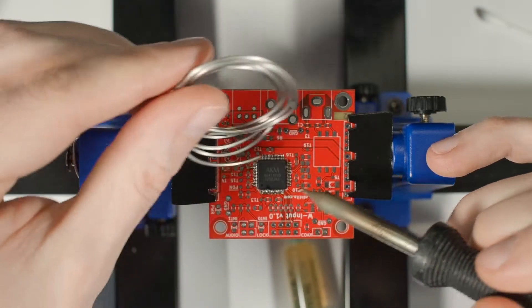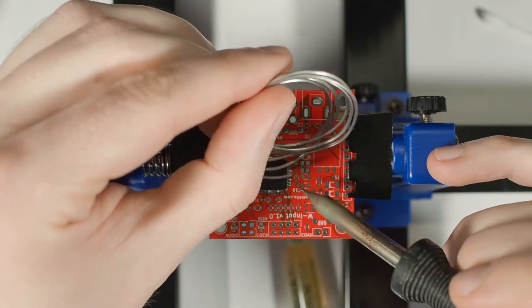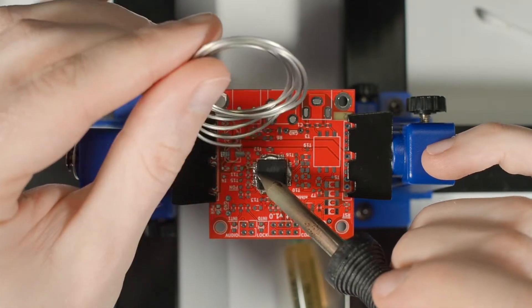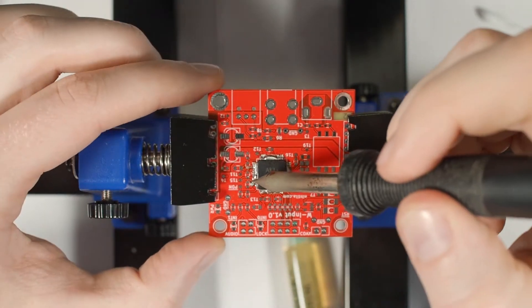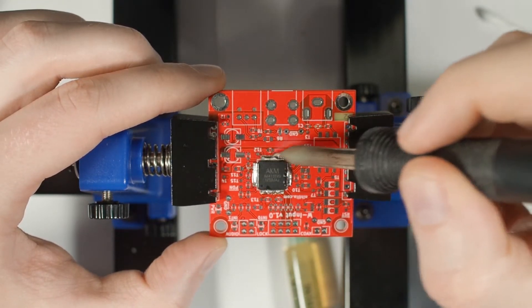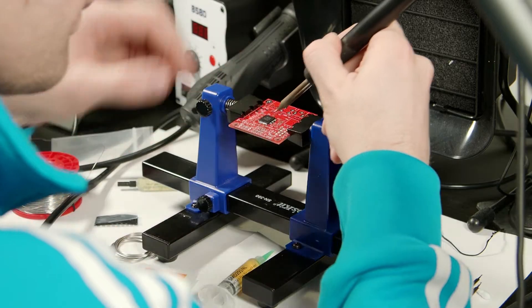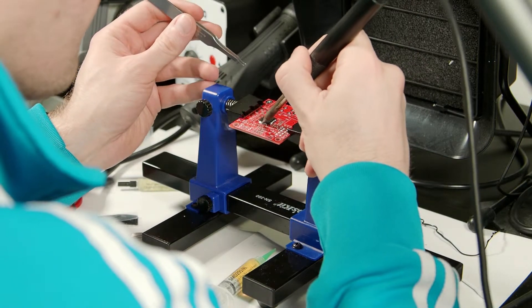You don't want to put it too much because the absolute negative point of using this stuff is that it's really messy. So the less you have it the less you have to clean afterwards. It's already quite a lot I put now. So you just put here around, try to kind of cover everything.